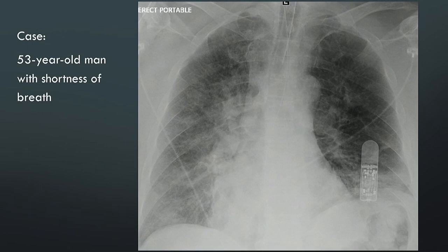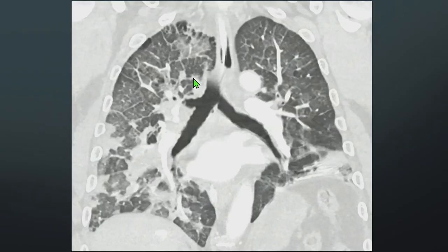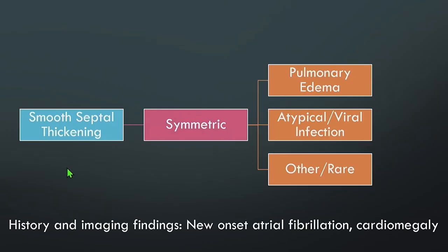Case: a 53-year-old man with shortness of breath. There is cardiomegaly, bilateral perihilar fullness, and reticular opacities on chest x-ray — a good look for pulmonary edema. On CT, there is interlobular septal thickening that looks smooth in morphology, outlining those secondary pulmonary lobules, and it is bilateral and fairly symmetric. A coronal image also shows the smooth interlobular septal thickening. With smooth symmetric thickening and history of new-onset atrial fibrillation and cardiomegaly, this is pulmonary edema.